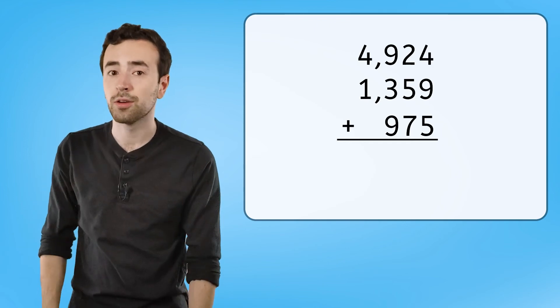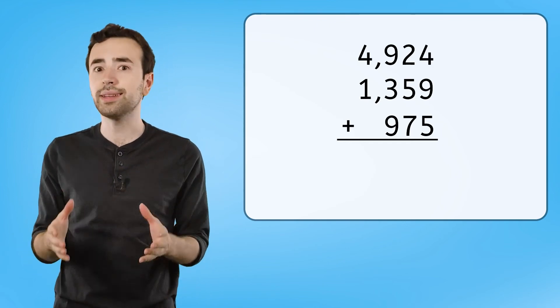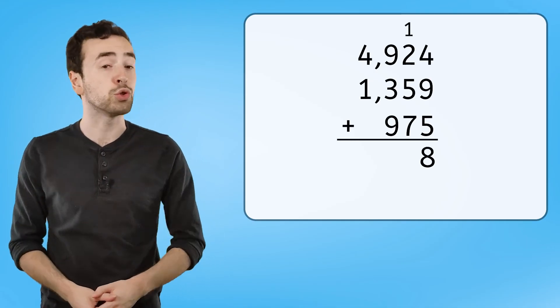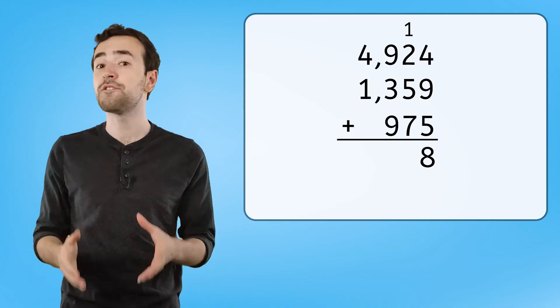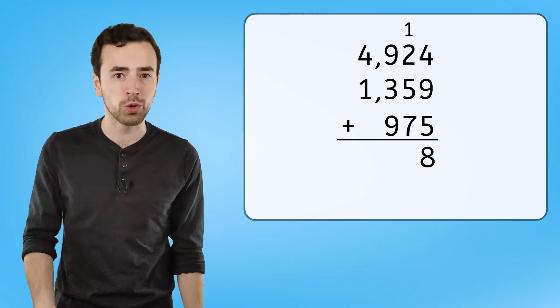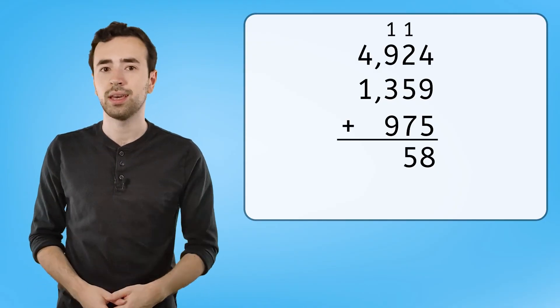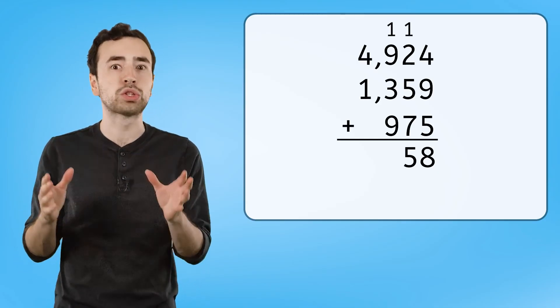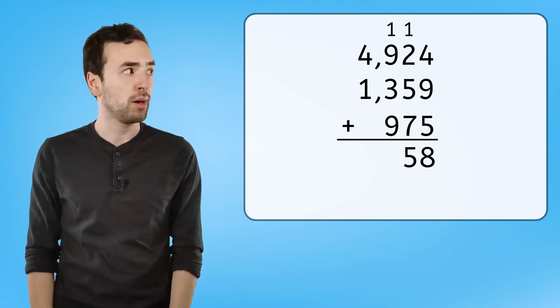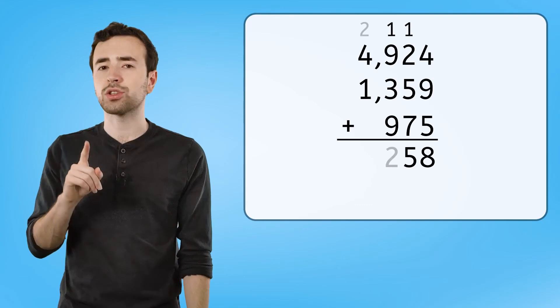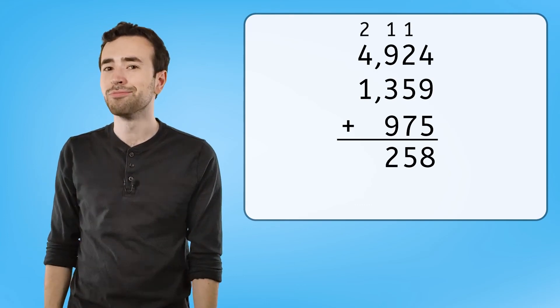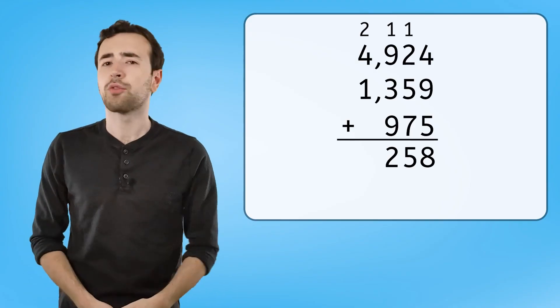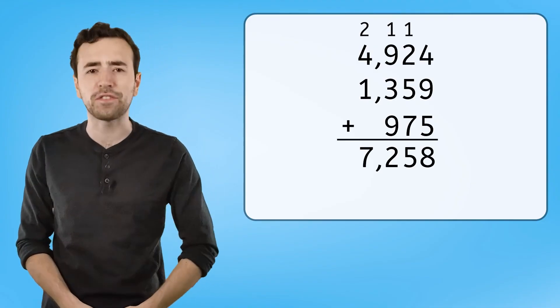Starting in the ones place, four plus nine plus five equals eighteen ones, which can be regrouped as one ten and eight ones. One plus two plus five plus seven equals fifteen tens, which can be regrouped as one hundred and five tens. And then, one plus nine plus three plus nine equals twenty-two hundreds. Did you regroup that as two thousands and two hundreds? Neat. So then, two plus four plus one equals seven thousands for a final total of seven thousand two hundred fifty-eight dollars.